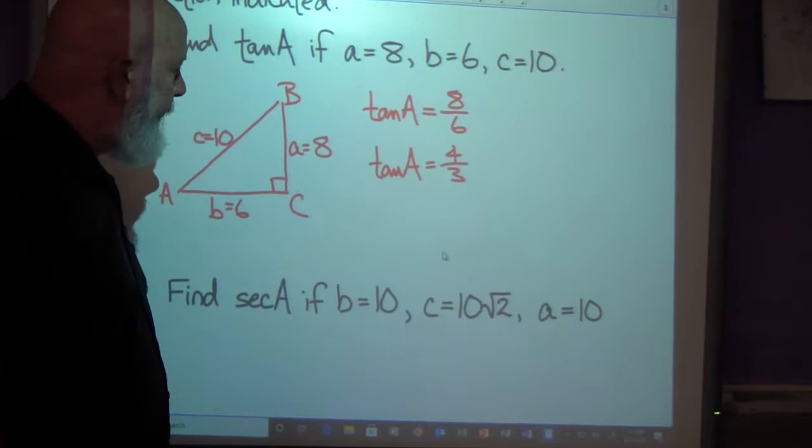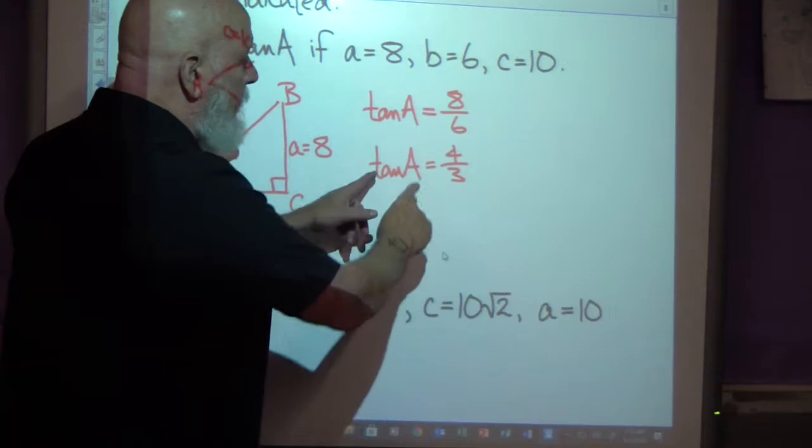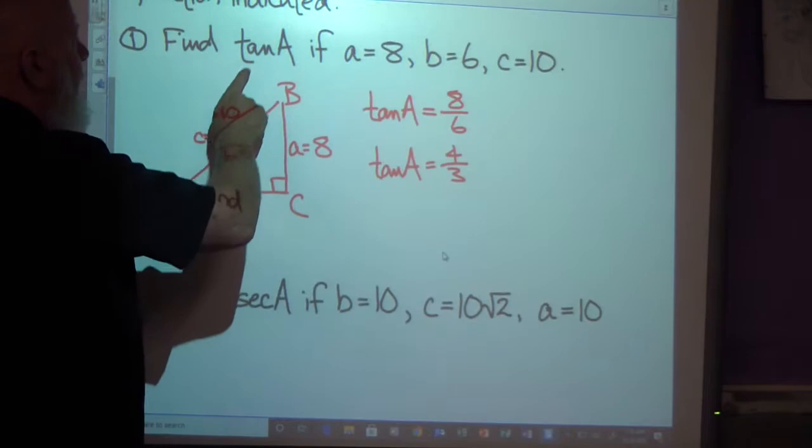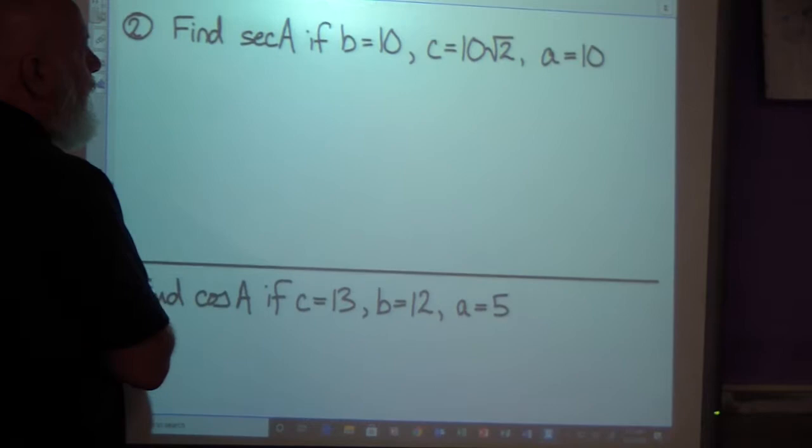And we would look for that among our choices and there we go. And we were asked to find angle A of course. Hopefully by now you'd realize when we take the inverse tangent that would give us the measure of angle A. But we weren't. We were just asked to find the tangent of A. So let's move on to the next one.